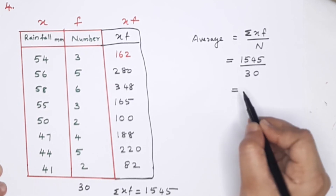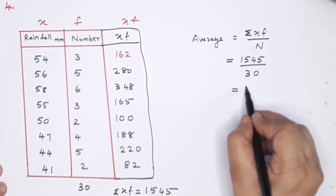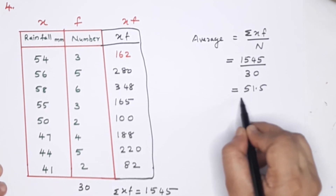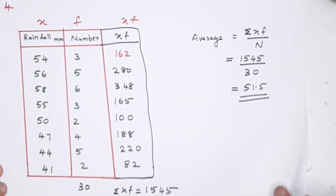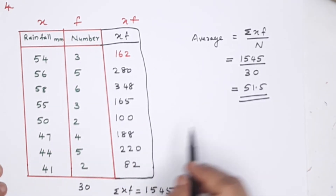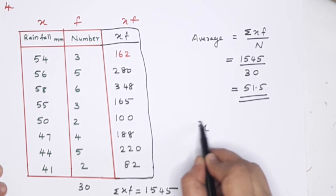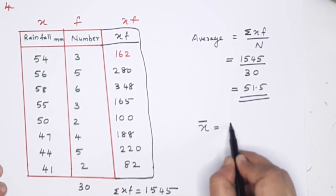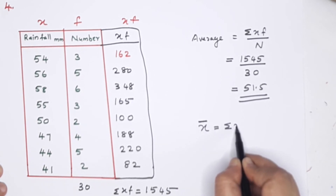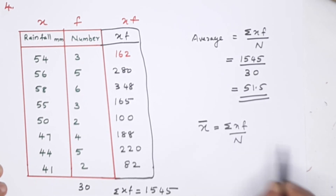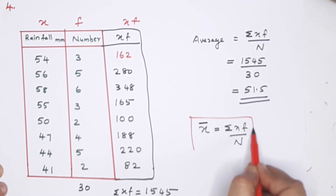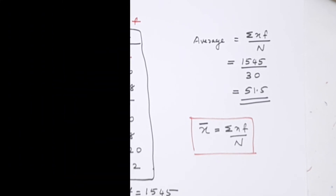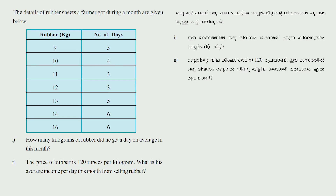The average equals sigma xf divided by N: sigma xf is 1,545 divided by 30, which equals 51.5. The average rainfall per day is 51.5. Using the formula x-bar equals sigma xf by N.